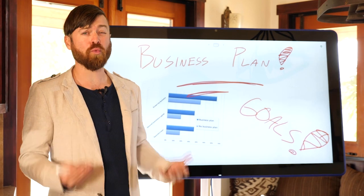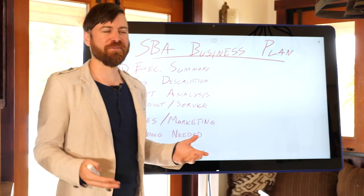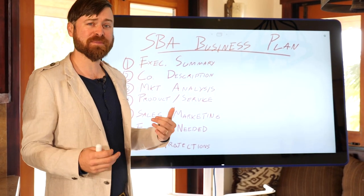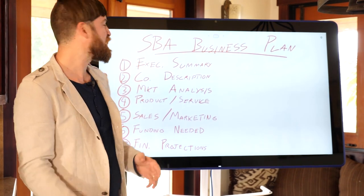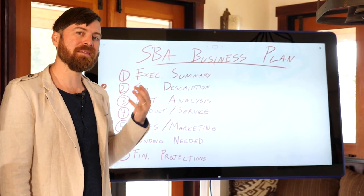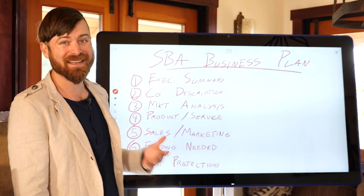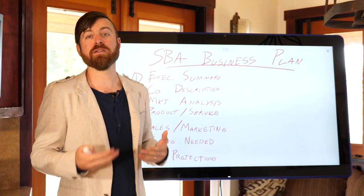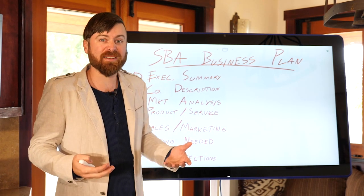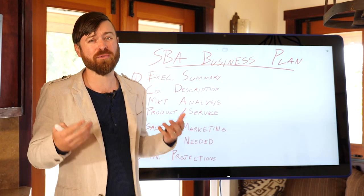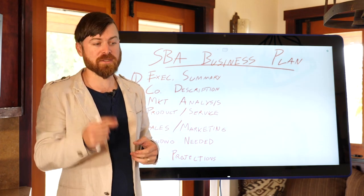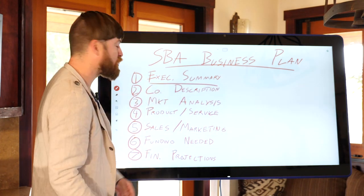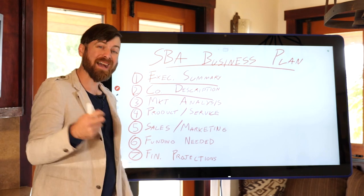I'm not going to go in depth into how to write a business plan — you can Google it for more information — but I've given you a summary of what is in one. This is recommended by the Small Business Administration, a government entity which funds over half a billion dollars of small businesses every single year. If you're looking to start a business, getting a loan from the government is a really easy option. First, you need an executive summary, which is essentially just a summary of what the business is going to be. Number two is a company description.